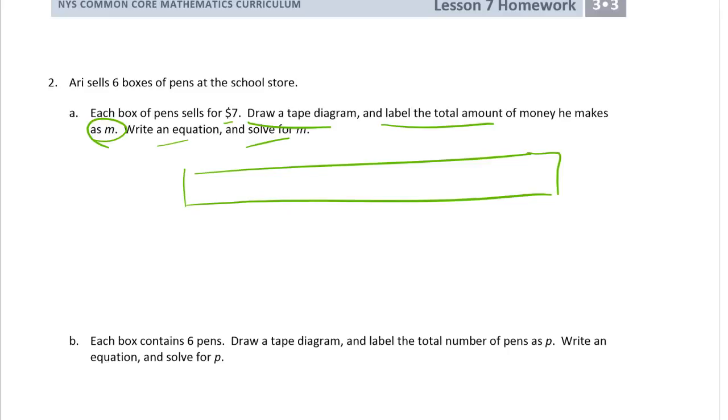And we know he sells 6 boxes. So that's one, two, three, four, five, six. And each box sells for $7. So there's a 7 in every box. Okay. Now we're labeling the total amount of money he makes as M. So that's this. There.